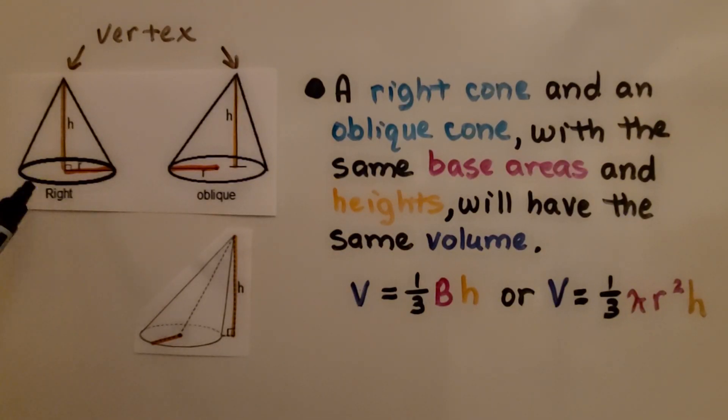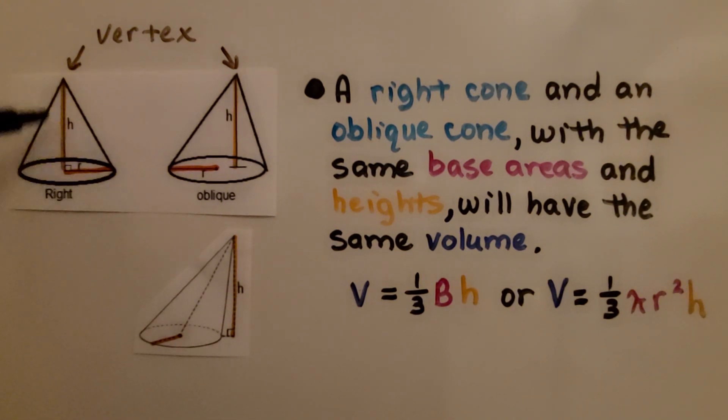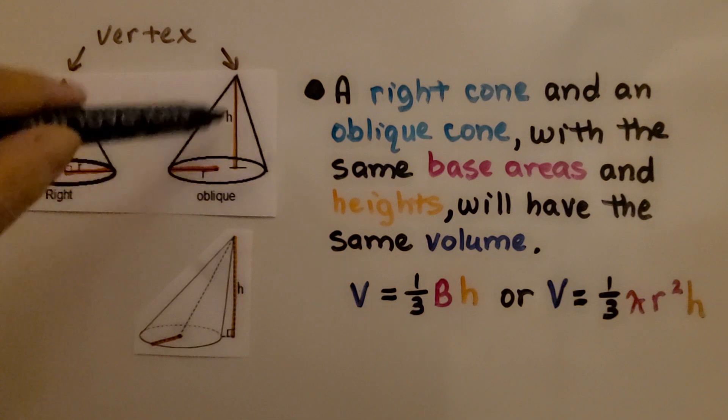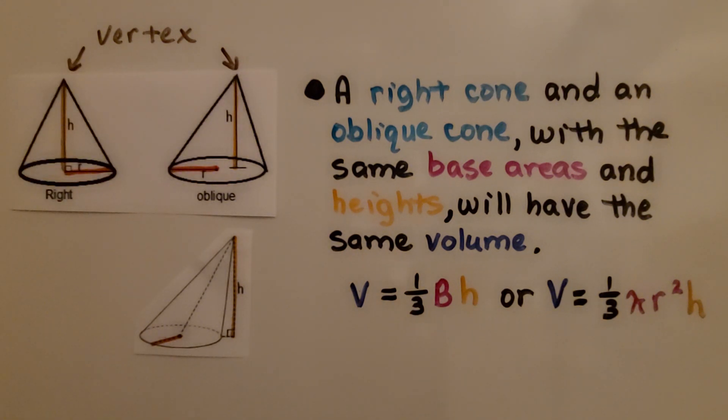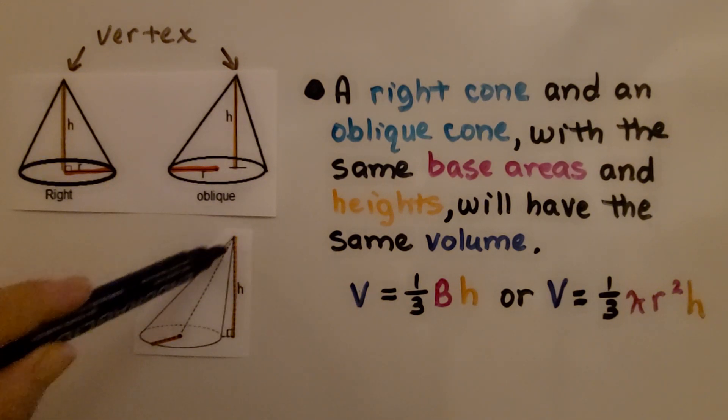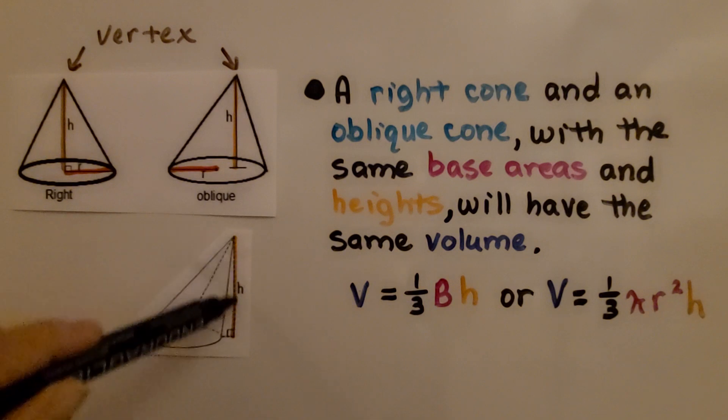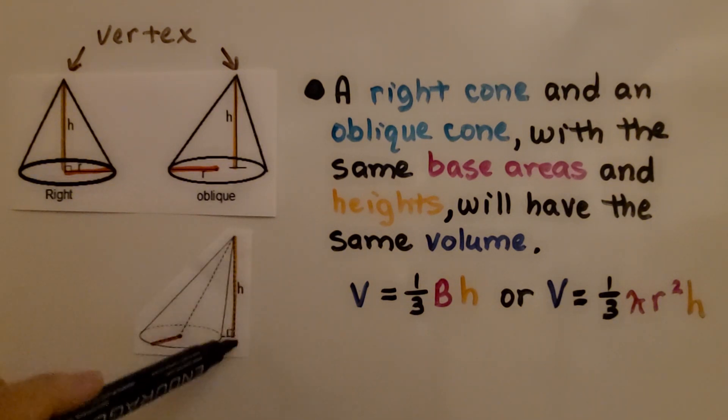We have a right cone and an oblique cone that's leaning. A right cone and an oblique cone with the same base areas and heights will have the same volume. We'll use the same formula to find their volume. This one's really leaning, so the height is on the outside here. You can see it's perpendicular to the base and it goes straight up to the vertex.